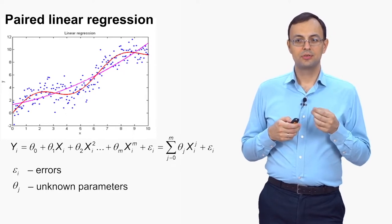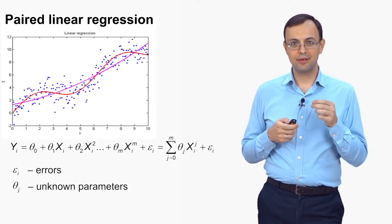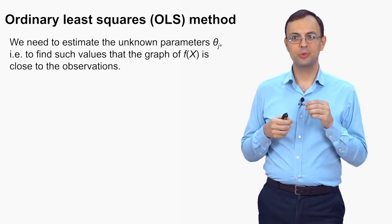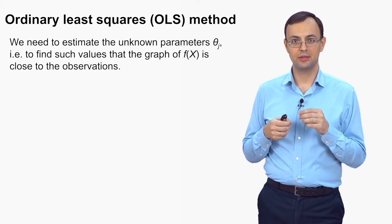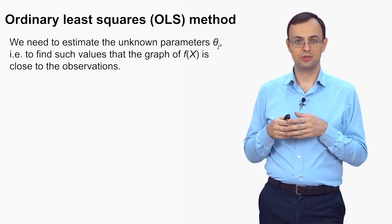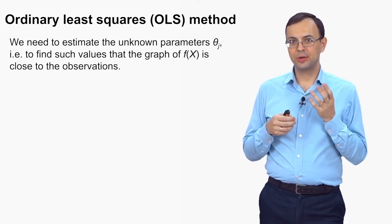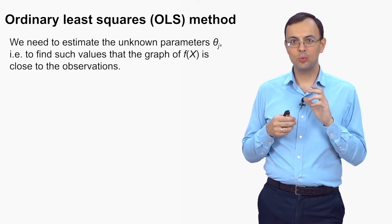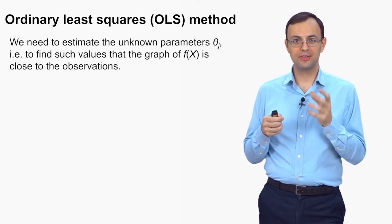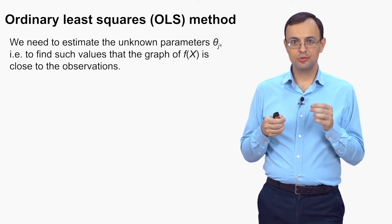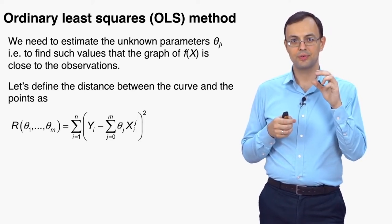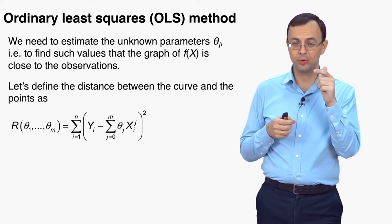We want to choose coefficients such that the graph of the polynomial is close to the observed points. In other words, we need to estimate the unknown parameters theta j in such a way as to make the curve close to the observations. The question is: what do we mean by 'close'? The most popular way to measure this is as the sum of squared vertical deviations of the points from the curve.